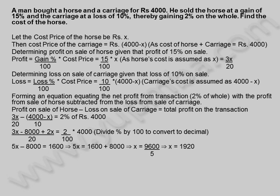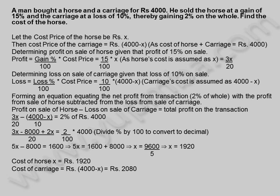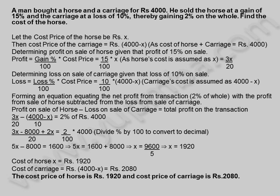5X equals 1,600 plus 8,000, implying X equals 9,600 by 5, which equals 1,920. Cost of horse X is equal to Rs. 1,920. Cost of carriage is equal to 4,000 minus X, which equals Rs. 2,080. Therefore, the cost price of horse is Rs. 1,920 and cost price of carriage is Rs. 2,080.